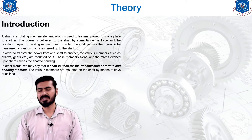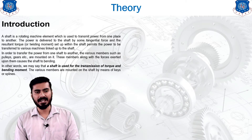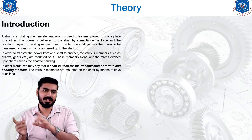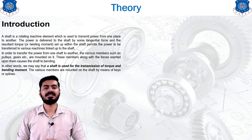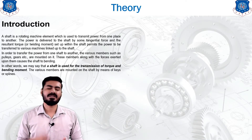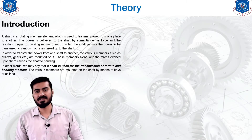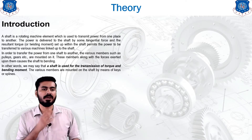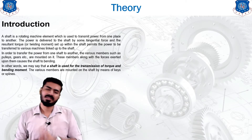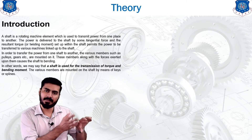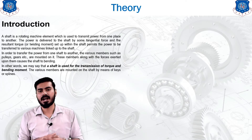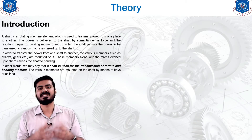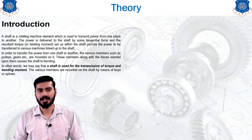The shaft is a rotating machine element which is used to transmit power from one place to another. If you want to transmit power from one place to another, you simply rotate the shaft and transmit the power from one end to another. Power is delivered to the shaft by some tangential force, and the resultant torque or twisting moment set up within the shaft permits the power to be transmitted to various machines linked up to the shaft — also known as a line shaft.